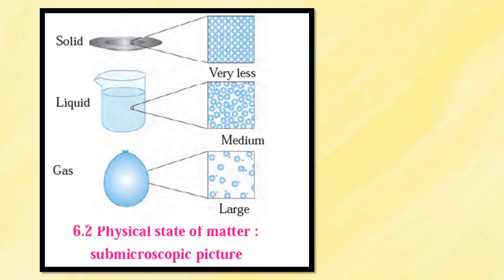The intermolecular force is very weak in gases. Therefore, the constituent particles of gases move freely and occupy all the available space. From the diagram on the screen, you can see the particles are very far away from each other. Consequently, gases have neither definite shape nor definite volume.